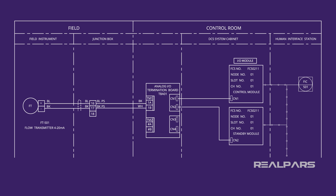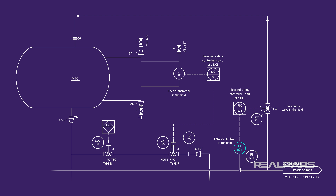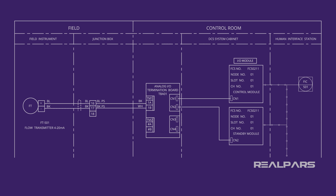Let's drill down a bit deeper and look at how the P&ID relates to the flow loop diagram. We've placed green circles around FT501 and FIC501. Referring back to the P&ID, you will see that FT501 is a flow transmitter in the field and FIC501 is a shared control in the DCS. This is a good time to point out the blue circle around the software signal lines as they show how the DCS connects with the HMI.